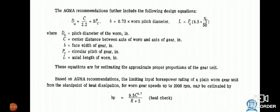As per AGMA recommendation, further include the following design equations: D_W = C / 2.2 = 3P_C, B = 0.73 × worm pitch diameter, L = P_C × (4.5 + N_G / 50), where D_W = pitch diameter of worm, C = center distance between axis of worm and axis of gear, P_C = circular pitch, L = actual length of worm.